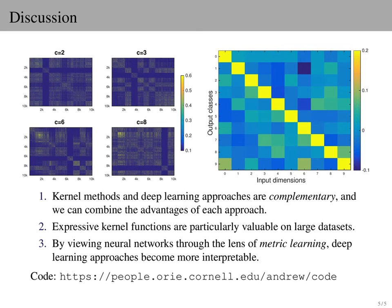Overall, this work emphasizes that kernel methods and deep learning approaches are complementary rather than competing. We can combine the advantages of each approach. The deep architectures provide powerful inductive biases, the kernel provides an elegant non-parametric representation, and Bayesian inference helps automatically calibrate complexity. We also see that expressive kernel functions are highly valuable on large datasets, where our approach continues to substantially improve with access to additional training instances.